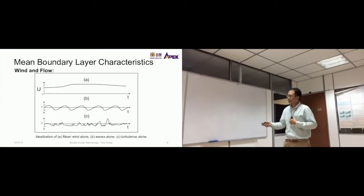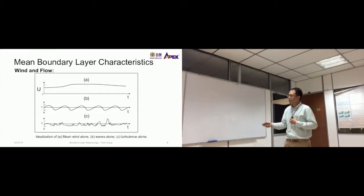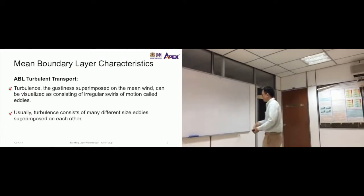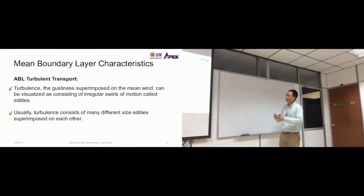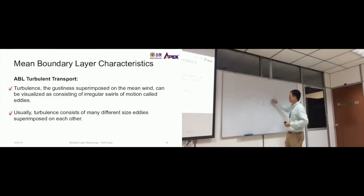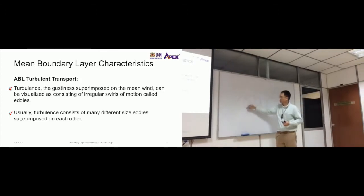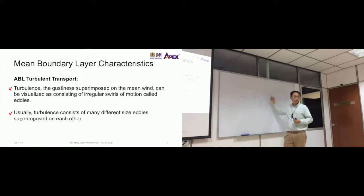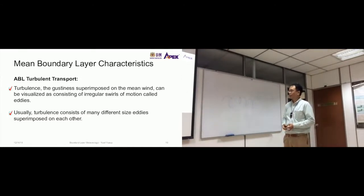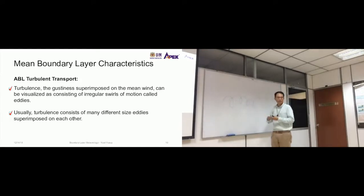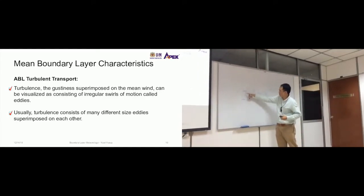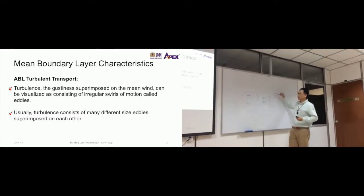If we extract the turbulent component from the mean wind, we get the turbulent component. Turbulence consists of many different size eddies superimposed on each other — they are not all the same size. There are small eddies, large eddies, and even smaller ones, so the sizes of eddies form a spectrum.